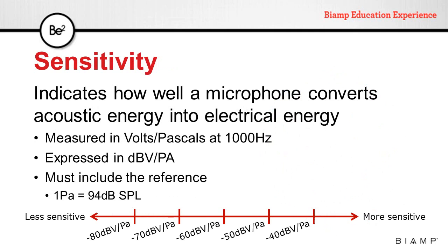Microphone sensitivity indicates how well a microphone will be able to convert acoustic energy into electrical energy. It is measured in volts over Pascals at 1000 Hz. Pascals is a pressure unit of measure. Sensitivity is expressed in dBV over Pascal and must include the reference level — one Pascal equals 94 dB SPL. The lower the number, the less sensitive the microphone; the higher it is, the more sensitive, and it will be able to pick up softer sounds.